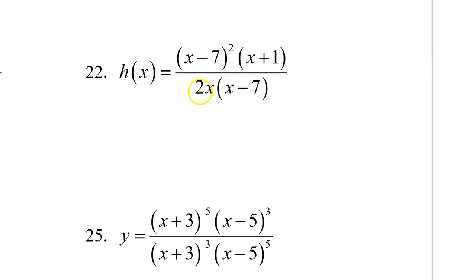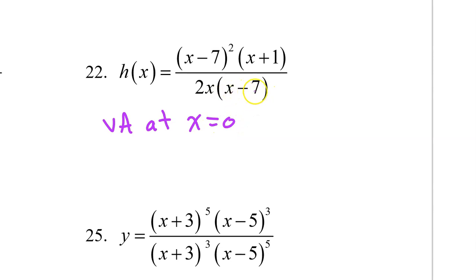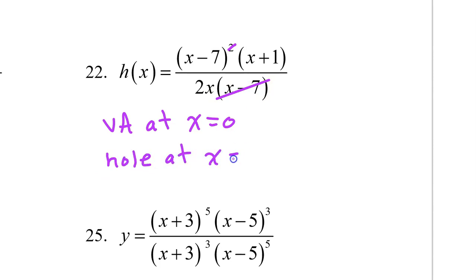Number 22: the 2 in the denominator is a constant — ignore that. The factor of x doesn't cancel out with anything, so that gives us a vertical asymptote at x equals 0. Then I see the factor of x minus 7 in the denominator. There are two factors of x minus 7 in the numerator. The one factor in the denominator will cancel out with one of the factors in the numerator. Because the factor in the denominator completely canceled out, that means we have a hole at x equals 7.